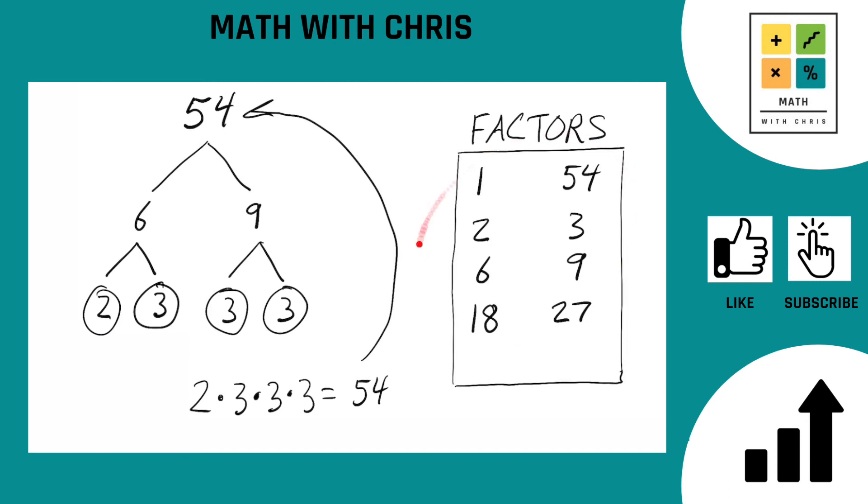We got our 8 factors of 54 here. They are in order. 1, 2, 3, 6, 9, 18, 27, and of course 54. We're done. So that's how you find the factors of 54 using a factor tree.